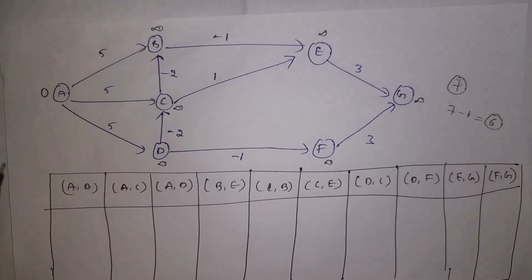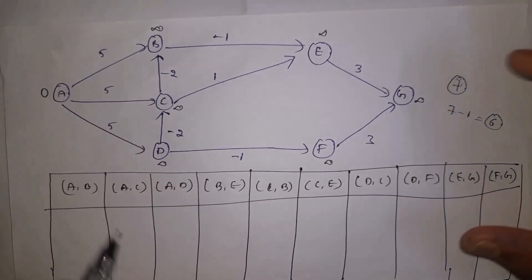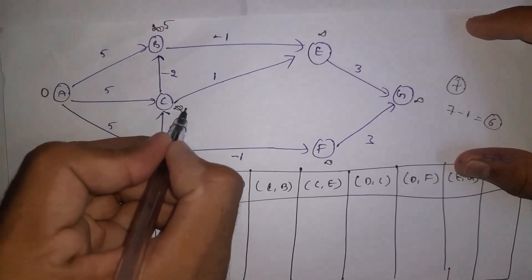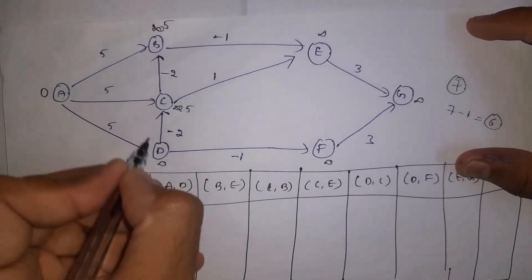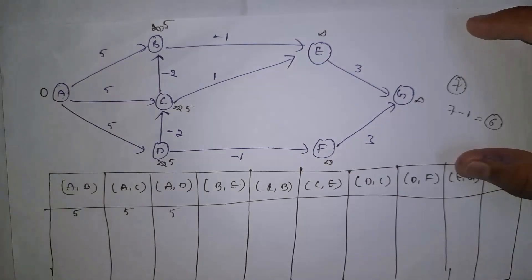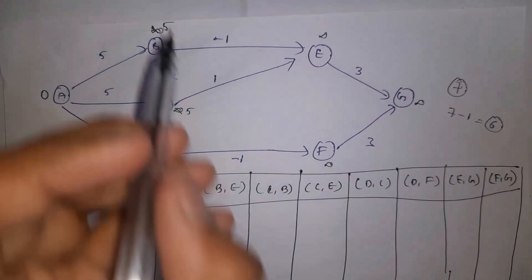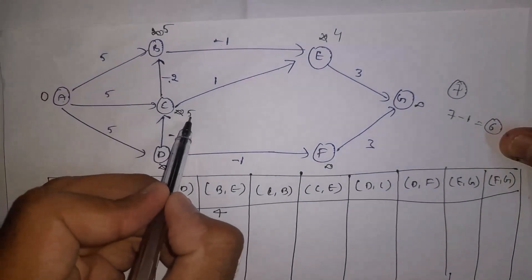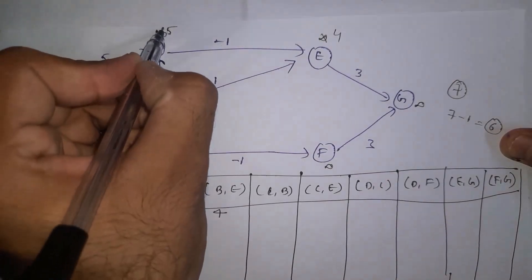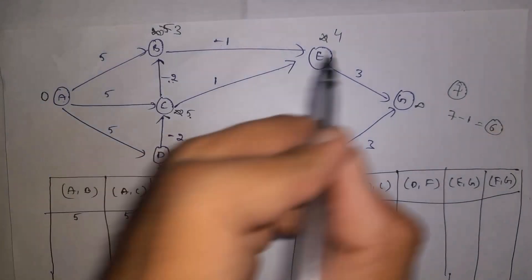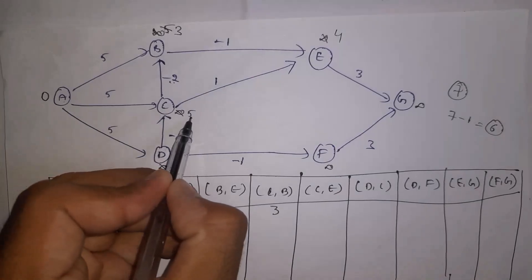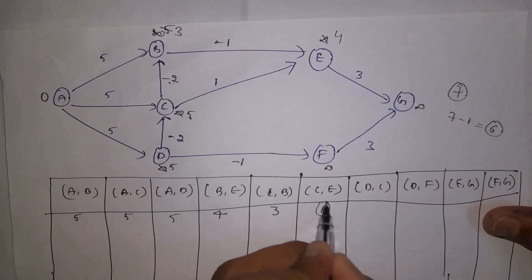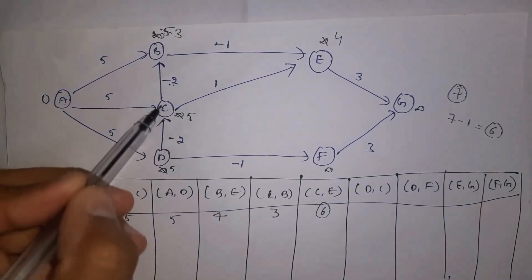From the source node we visit each node and replace infinity with the distance. From A to B, distance is 5 — replace infinity with 5. From A to C, distance is 5 — replace infinity with 5. From A to D, distance is 5 — replace infinity with 5. From B to E: A to B is 5, so 5 minus 1 equals 4 — write 4. From C to B: 5 minus 2 equals 3, which is smaller than 5 — replace 5 with 3.